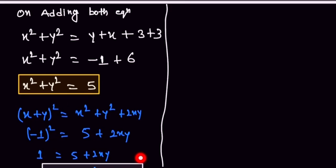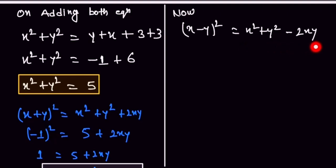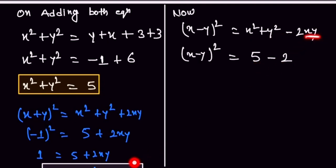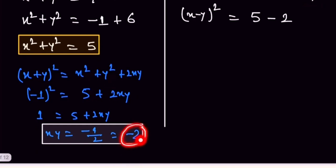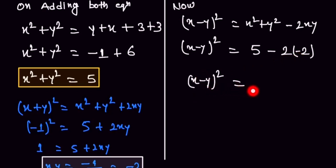Now we use another identity: (x−y)² equals x² plus y² minus 2xy. We substitute x² plus y² equals 5 and xy equals minus 2, so (x−y)² equals 5 minus 2 times (minus 2), which equals 5 plus 4 equals 9. Therefore x minus y equals 3.